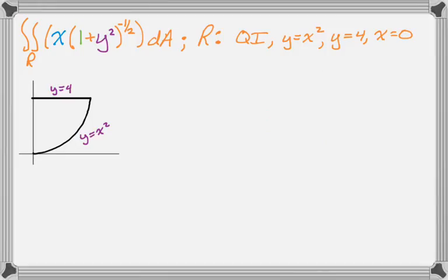So let's take a look at the first problem. It's going to be the double integral of x times (1 + y²)^(-1/2) dA, which means we get to pick the order of integration, where the region is in quadrant 1 bounded by y = x², y = 4, and x = 0.